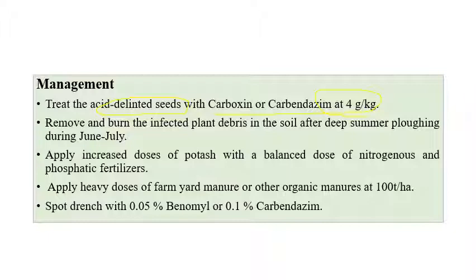Removing and burning of infected plant debris after harvesting is recommended. Deep summer plowing can also be recommended, especially during June and July in Indian conditions, when high temperatures occur during April, May, and June. Summer deep plowing helps destroy fungal inoculum and other materials when exposed to high temperatures. Increasing the dosage of potash application and minimizing balanced application of nitrogenous and phosphatic fertilizers is also advised.